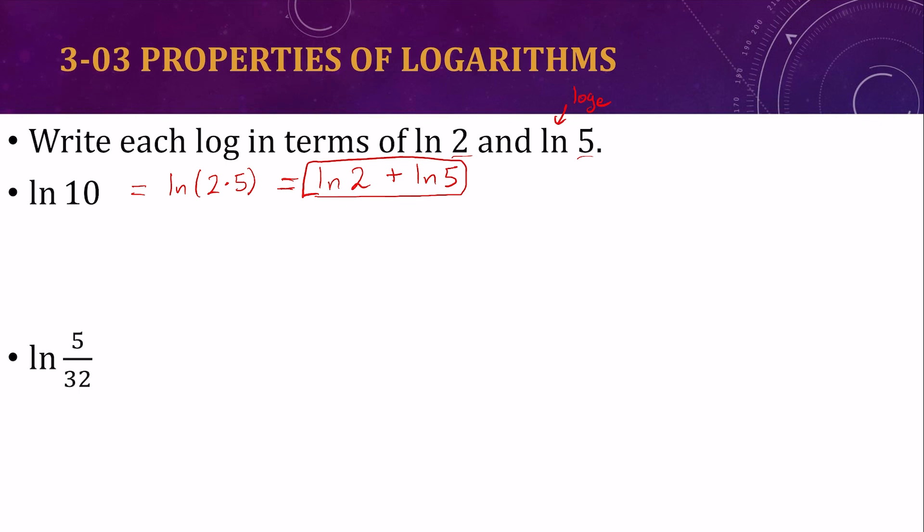Let's try another. Well, this looks like it's dividing. If we're dividing in a logarithm, we can write it as subtracting. Except for we have a 32 and I want it in 2s and 5s. Well, conveniently, 32 is 2 to the 5th.